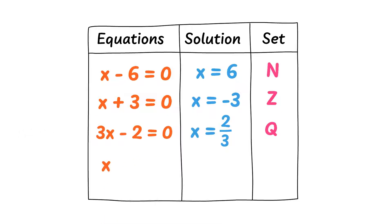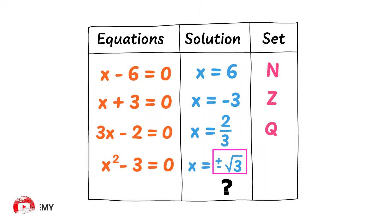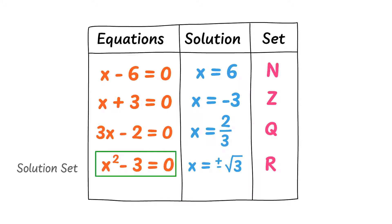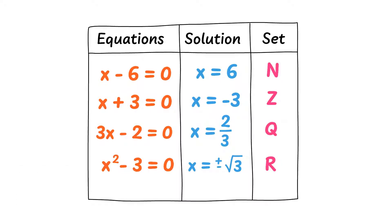Fourthly, consider x squared minus 3 is equal to 0. We know that its solution is x is equal to plus or minus square root of 3. Plus root 3 and negative root 3 are irrational numbers. So the solution of this equation lies in the set of irrational numbers or real numbers.